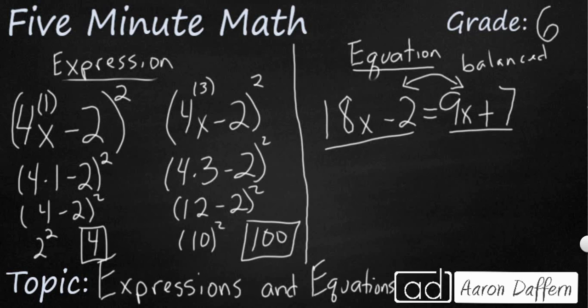So we know how to deal with these equations. We need to get all our variables on one side and our constants on the other. Let's get our like terms together. So I'm going to subtract 9x from both of these sides here. And so that's going to give me 18x minus 9x. That's going to be 9x minus 2 equals 7.